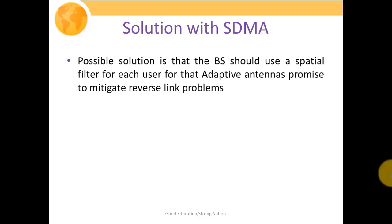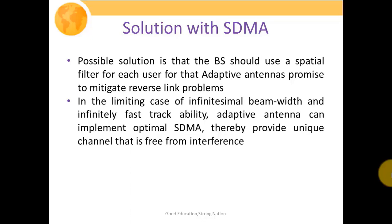The possible solution is that the base station should use a special filter for each user, with adaptive antennas promising to mitigate reverse link problems. In the limiting case, with infinitely small beam width and infinitely fast trackability, adaptive antennas can implement optimal SDMA, thereby providing a unique channel that is free from interference.